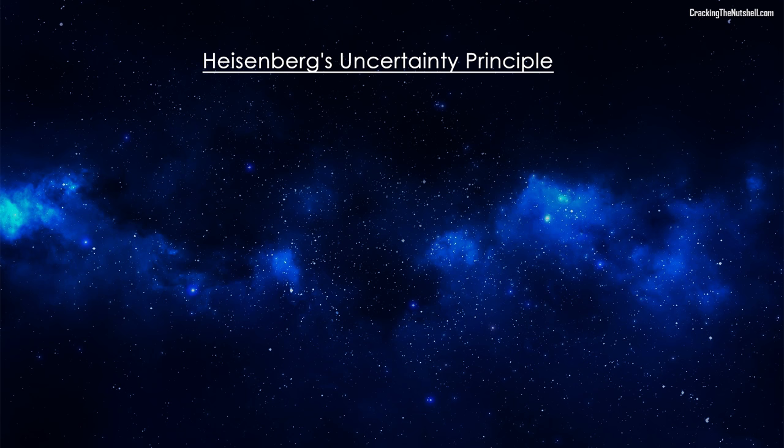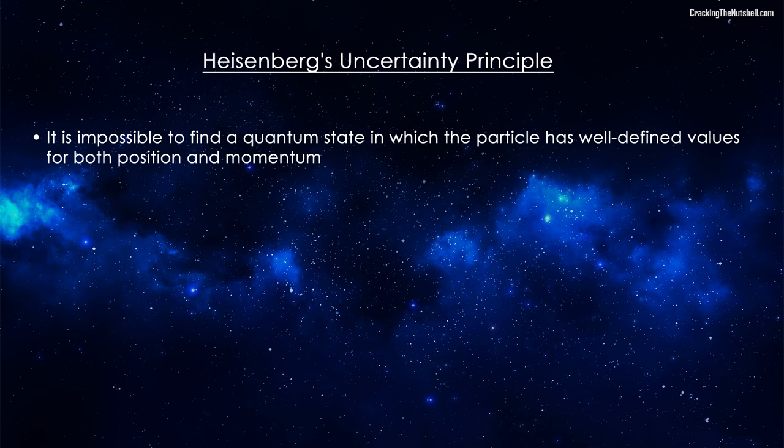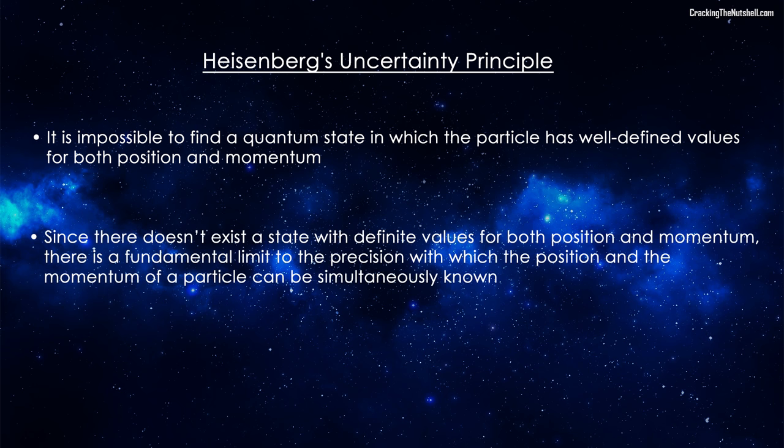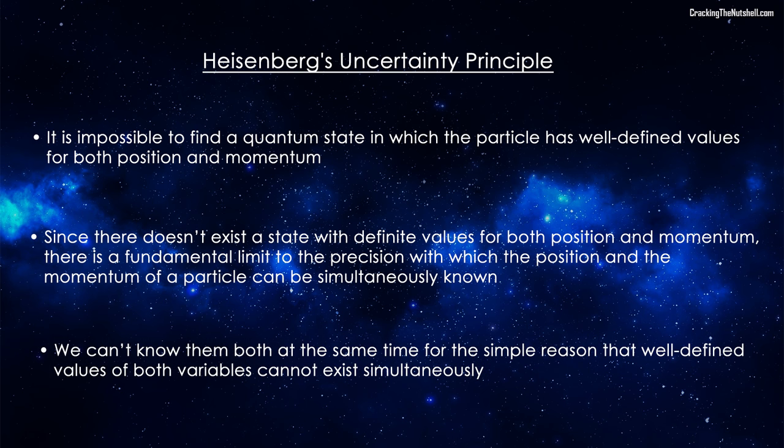So, what does the uncertainty principle actually tell us? It tells us that it is impossible, not just hard or difficult, but that it is impossible to find a quantum state in which the particle has well-defined values for both position and momentum. And remember, we are talking about components along the same axis here. Put another way, because there doesn't exist a state with definite values of both position and momentum, there is a fundamental limit to the precision with which the position and the momentum of a particle can be simultaneously known. We can't know them both at the same time for the simple reason that well-defined values of both variables cannot exist simultaneously.